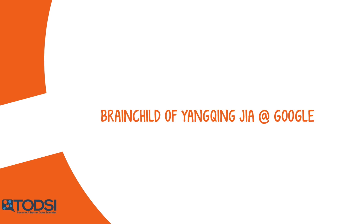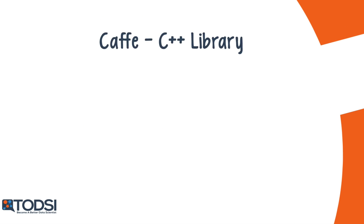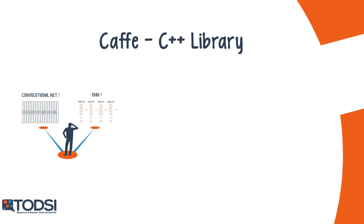The CAFE Deep Learning Library was created by Google's Yangqing Jia, who won an ImageNet Challenge in 2014. CAFE was originally designed for machine vision tasks, so it's well-suited for convolutional nets. However, recent versions of the library provide support for speech and text, reinforcement learning, and recurrent nets for sequence processing.